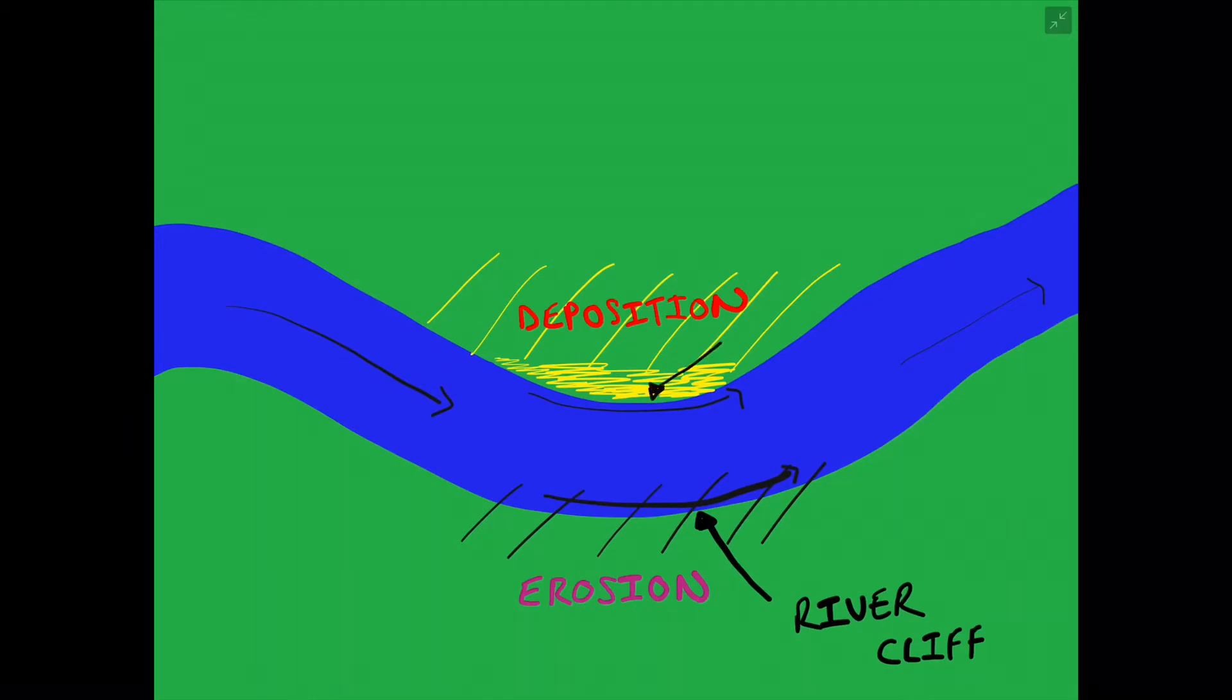This creates two features. On the outside bend we call it a river cliff and on the inside bend we call it a slip off slope.